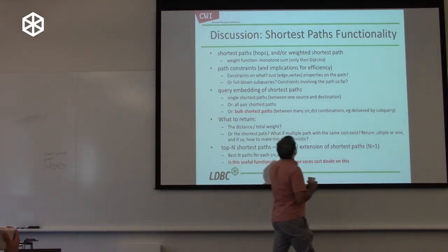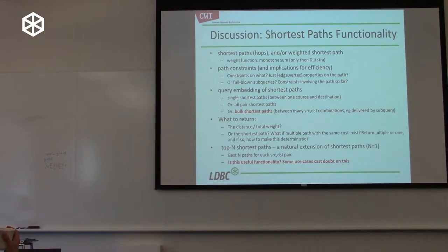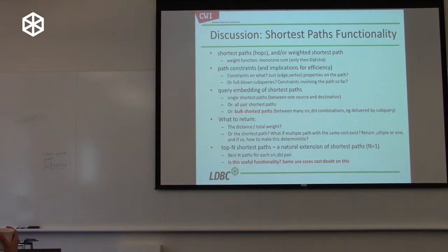One of the things discussed was the functionality of shortest paths. This discussion is not only from the feature side but also considers the systems consequences of a particular feature. Our group has a nice composition of both systems people and theory people. We got through to an agreement that we would like to have shortest paths, and we also want to guarantee good performance. Shortest path algorithms can be efficient as long as they fall in the class of weighted shortest paths — these are only supportable efficiently if the weight function is a monotone sum.